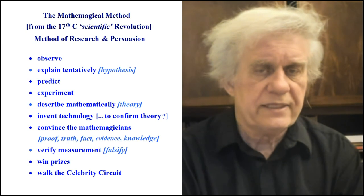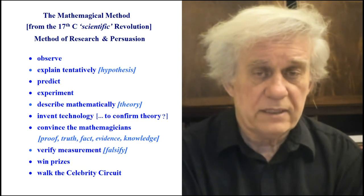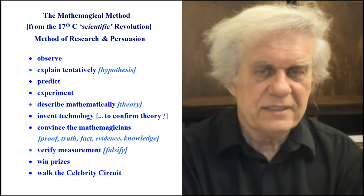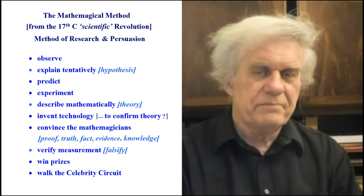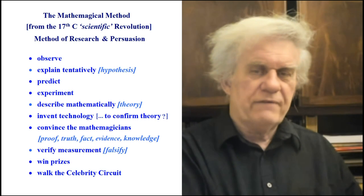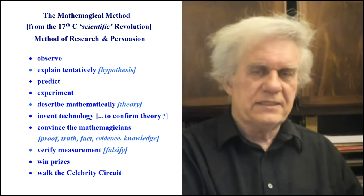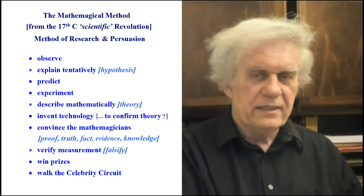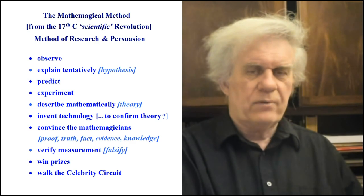They describe mathematically and call those descriptions 'theories,' but a description is not a theory - a theory is an explanation. Then they invent technology to confirm the theory. They say a quantum computer proves quantum is correct. But they admit they don't know how entanglement or superposition works - it's mystical to them. They didn't understand it, but they say they proved it by making a computer with 'quantum' in the name. GPS does not prove that time is a physical object you can dilate, stretch, or shrink. Gadgets do not prove anything.